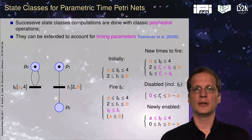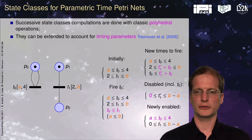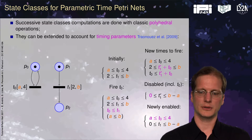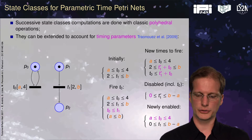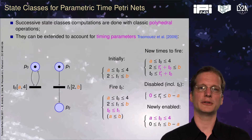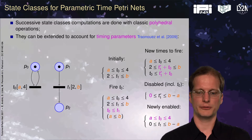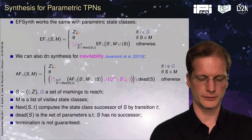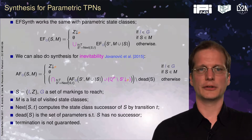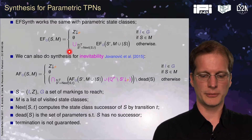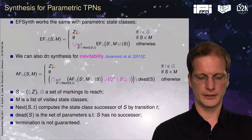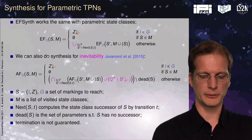This polyhedron has a particular form which we can call a parametric zone. However, we cannot ensure that there will be a finite number of parametric zones in the execution of a particular time Petri net. So we then use essentially the same algorithm as with parametric timed automata.